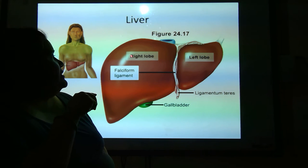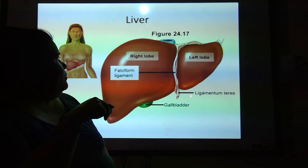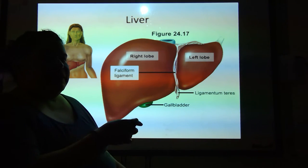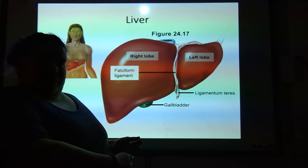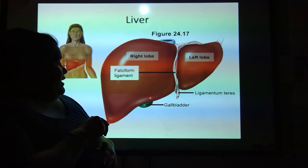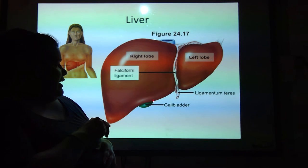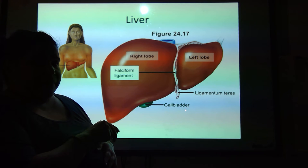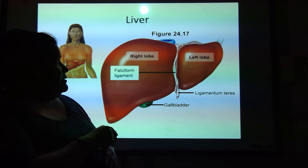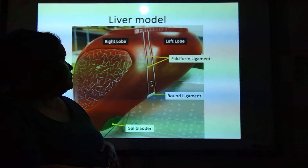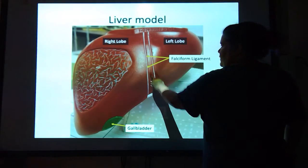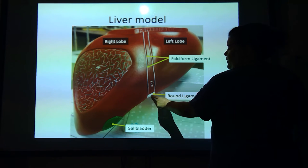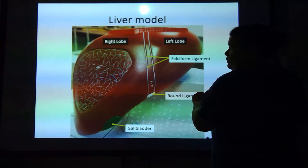Your liver has a right lobe and a left lobe. And this right here is the falciform ligament — the falciform ligament holds your liver to the front of your abdominal cavity. Down here, this little green thing peeking out is actually the gallbladder. And then you've got the ligamentum teres. On the model: right lobe, left lobe, there's the falciform ligament, the round ligament, and the gallbladder.